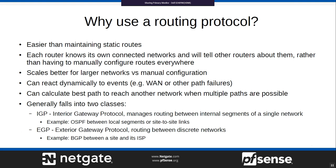You can also react dynamically to events. If you've got multiple paths or WANs, or your peers are set up in a ring or mesh topology, if some segment goes down your routing protocol can pick a new path. It may be a longer path or less desirable, but it can still get there.